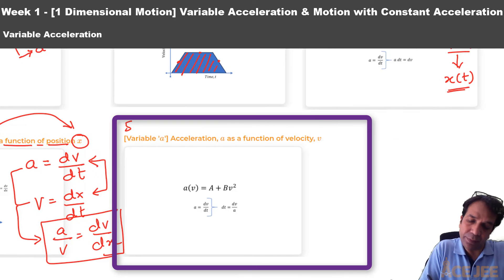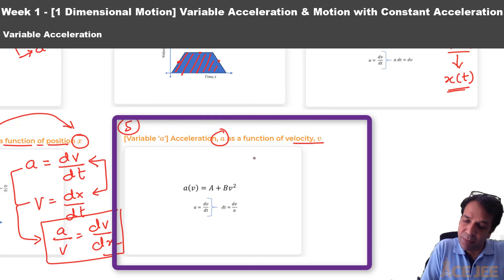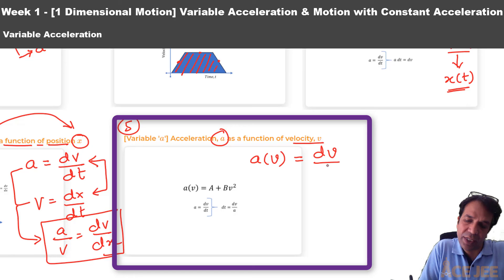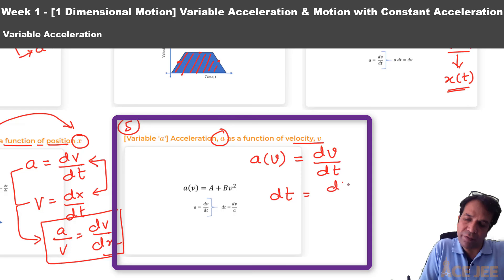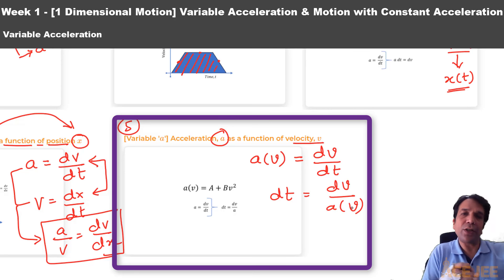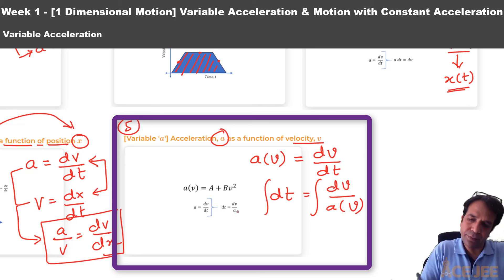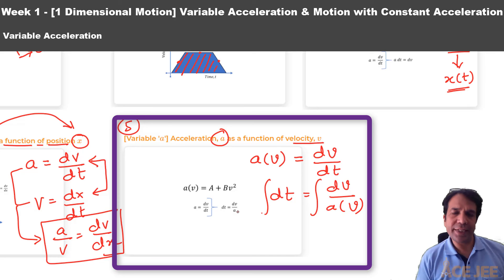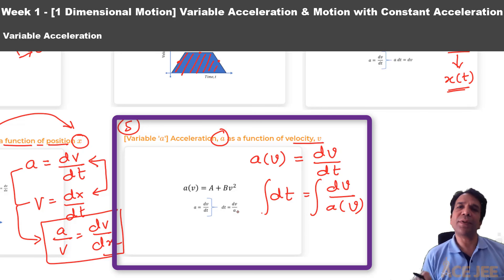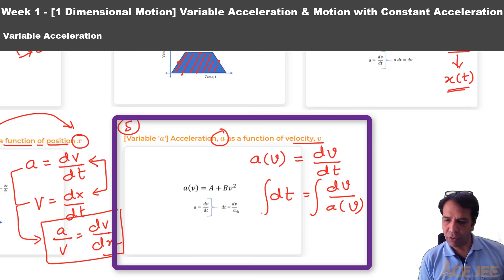In the fifth question type, acceleration a might be given as a function of velocity v. In this case, you can use the standard definition a equals dv/dt, and rearranging gives dt equals dv divided by a(v). The right-hand side is purely a function of v and the left-hand side is purely a function of time. I recommend referring to the detailed lecture video for each question type, where we deep dive into the concepts and take up a sample problem.